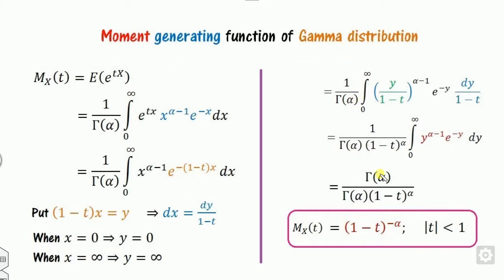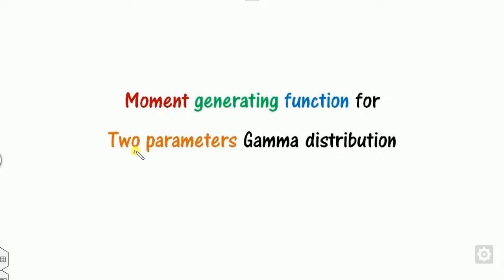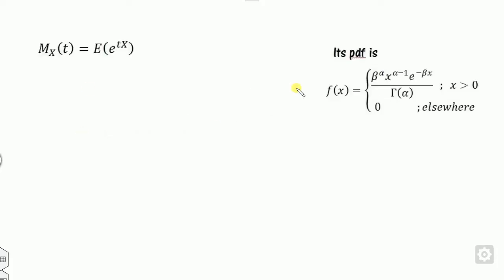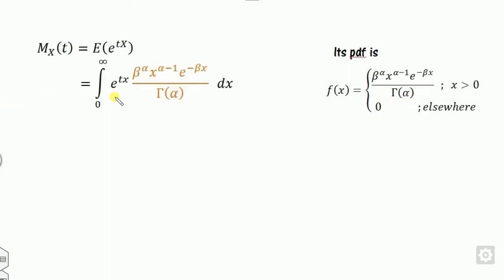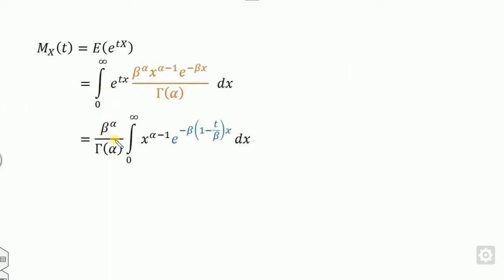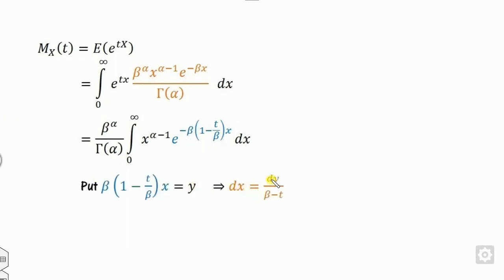This is the moment generating function of the standard gamma distribution. Similarly, we can derive the moment generating function for the two-parameter case. Starting from the definition, we substitute the PDF of the two-parameter gamma distribution. The integration is with respect to x, so the constant parts can be taken outside. We then apply the same substitution procedure.